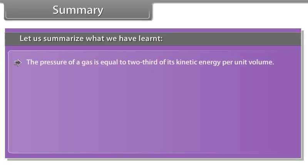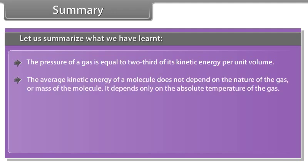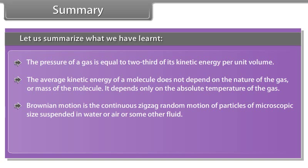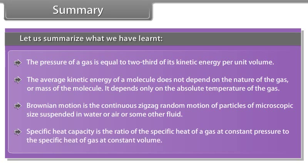The pressure of a gas is equal to two-thirds of its kinetic energy per unit volume. The average kinetic energy of a molecule does not depend on the nature of the gas or mass of the molecule. It depends only on the absolute temperature of the gas. Brownian motion is the continuous zigzag random motion of particles of microscopic size suspended in water or air or some other fluid. Specific heat capacity is the ratio of the specific heat of a gas at constant pressure to the specific heat of gas at constant volume.